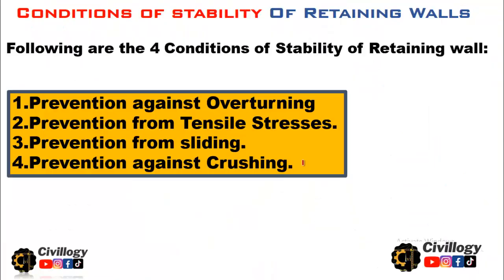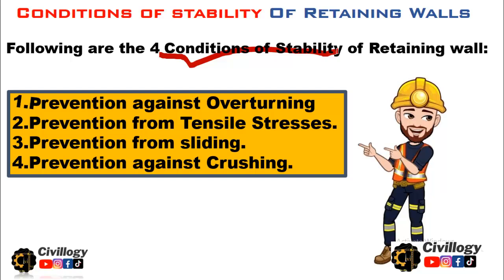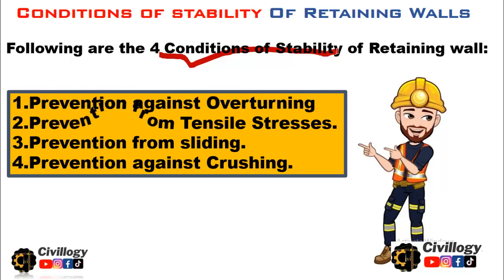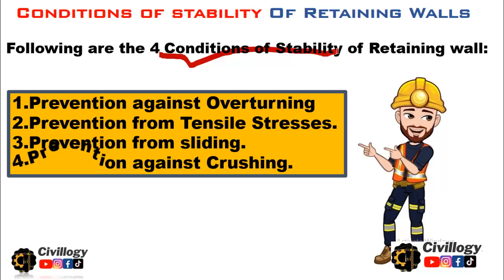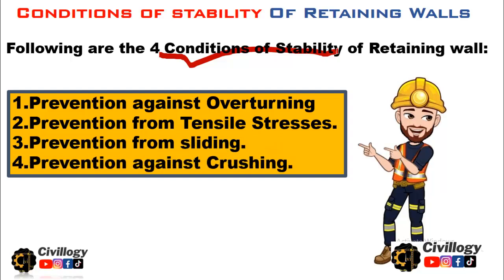Basically, there are four conditions of stability of retaining walls. First is prevention against overturning. Second is prevention from tensile stresses. Third is prevention from sliding, and the fourth is prevention against crushing. We will discuss these conditions one by one.